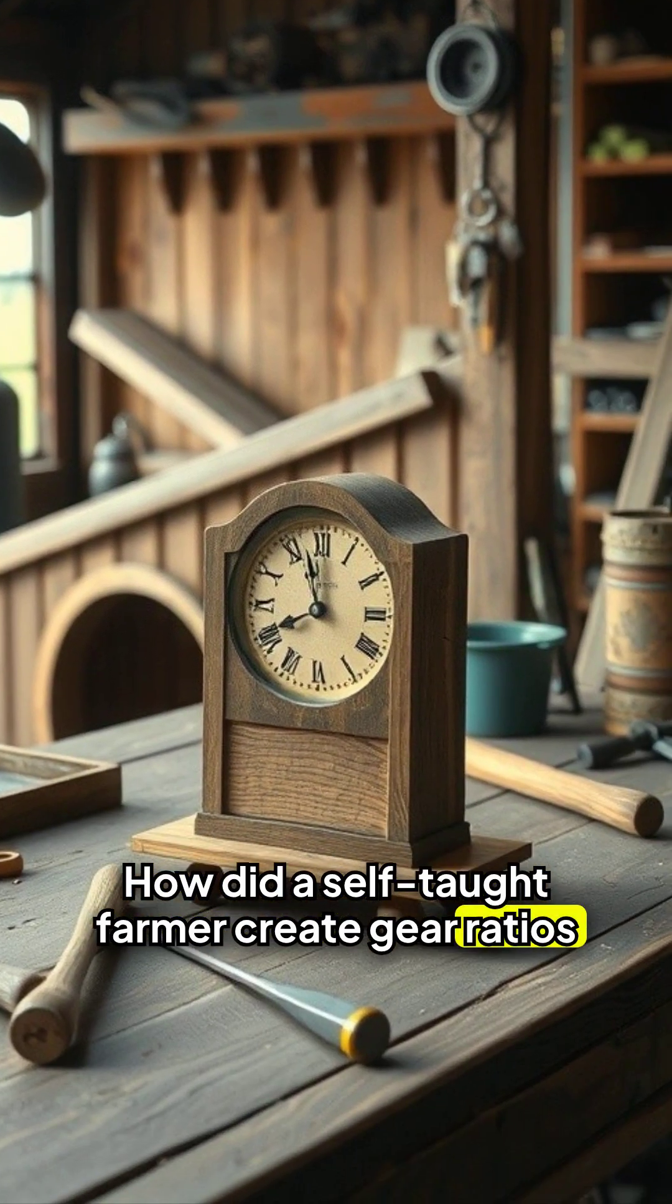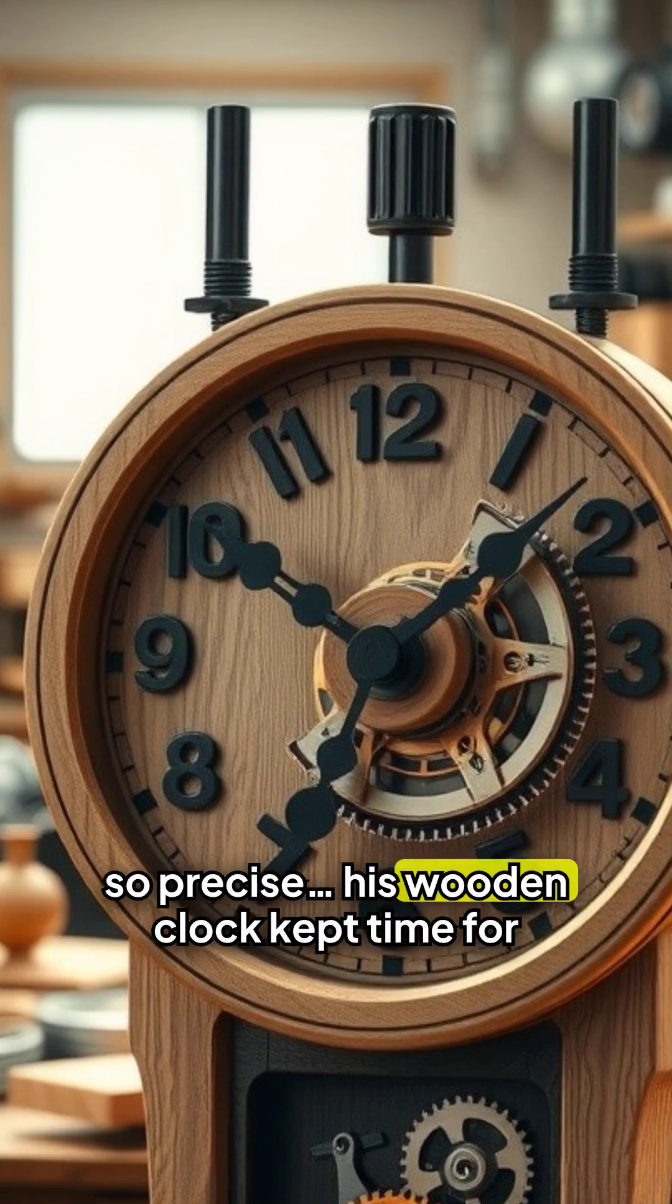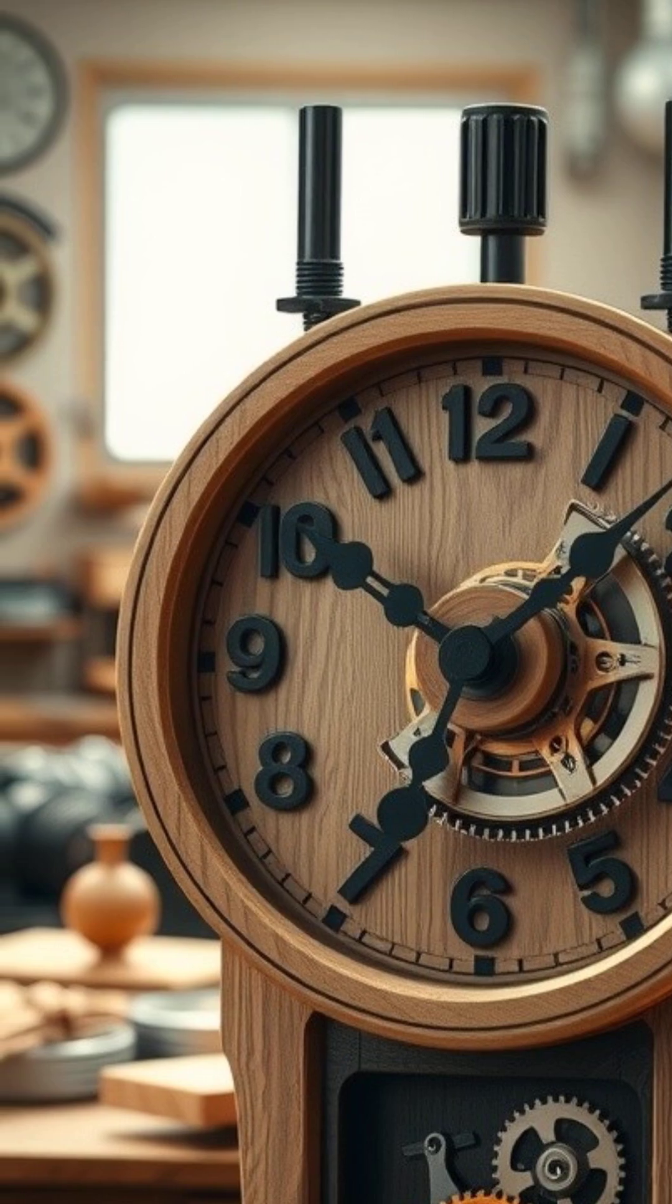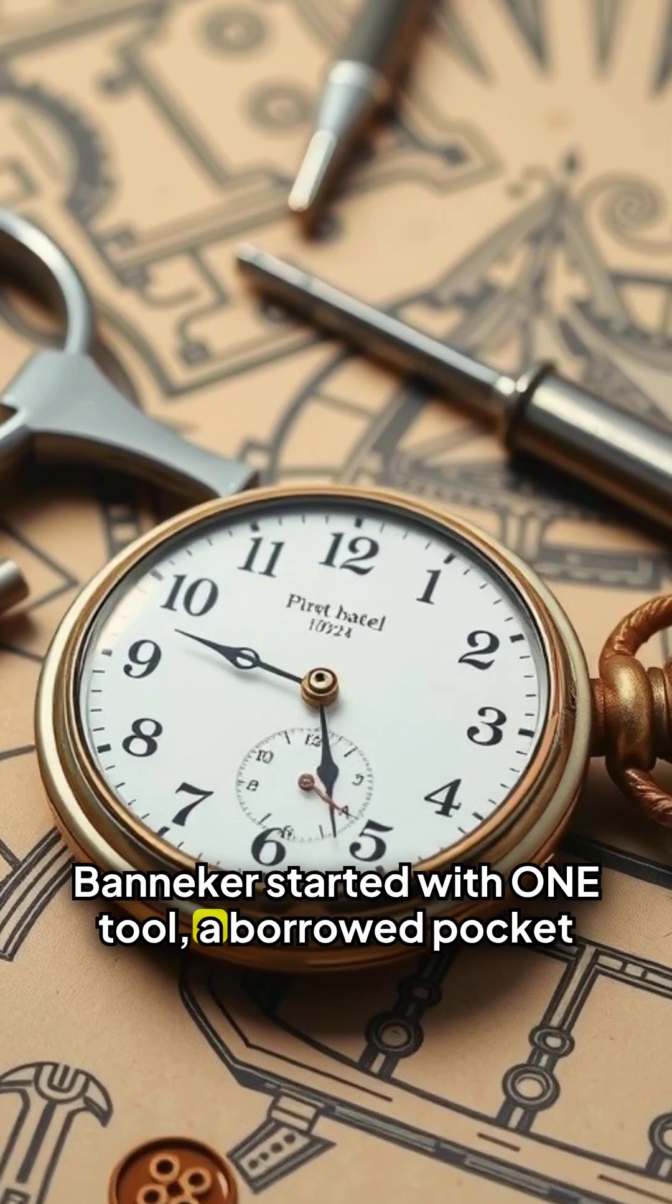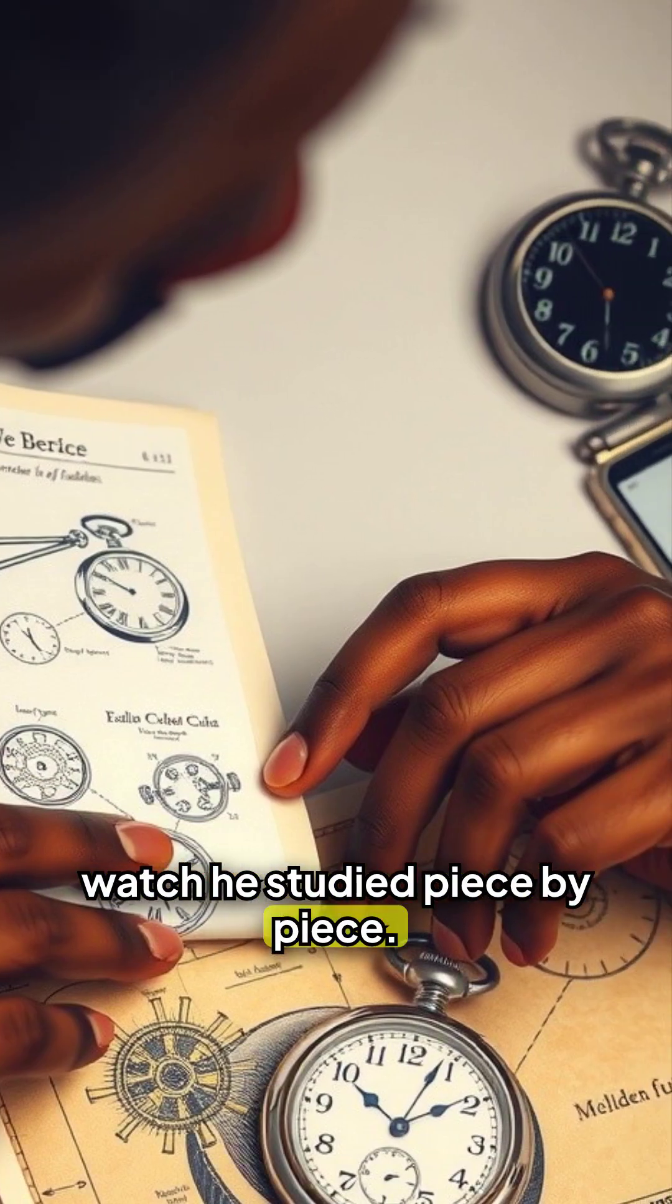How did a self-taught farmer create gear ratios so precise? His wooden clock kept time for decades. Banneker started with one tool, a borrowed pocket watch he studied piece by piece.